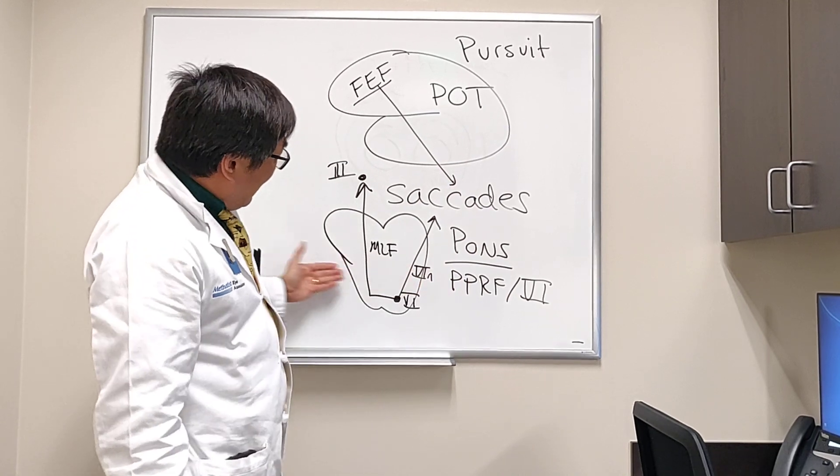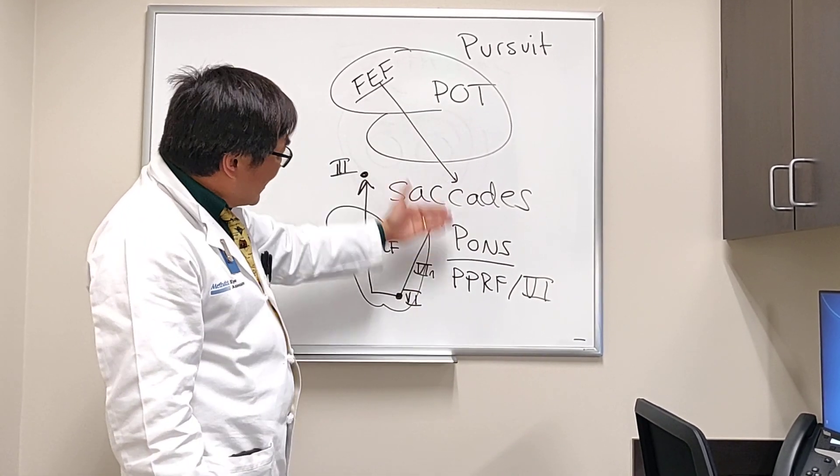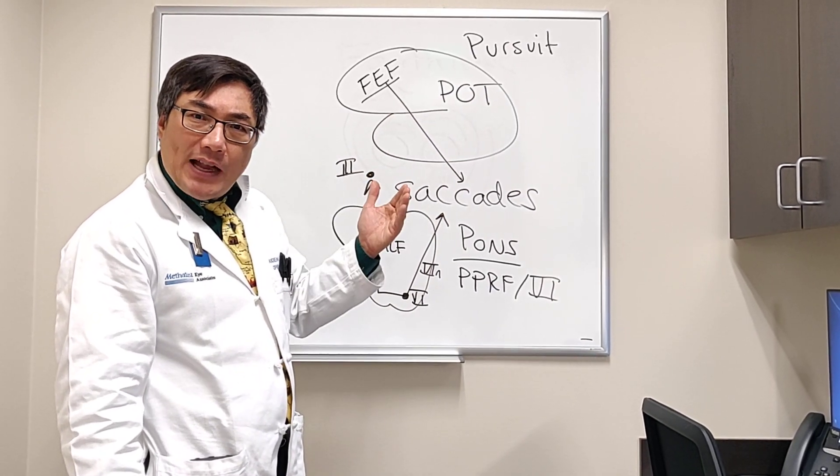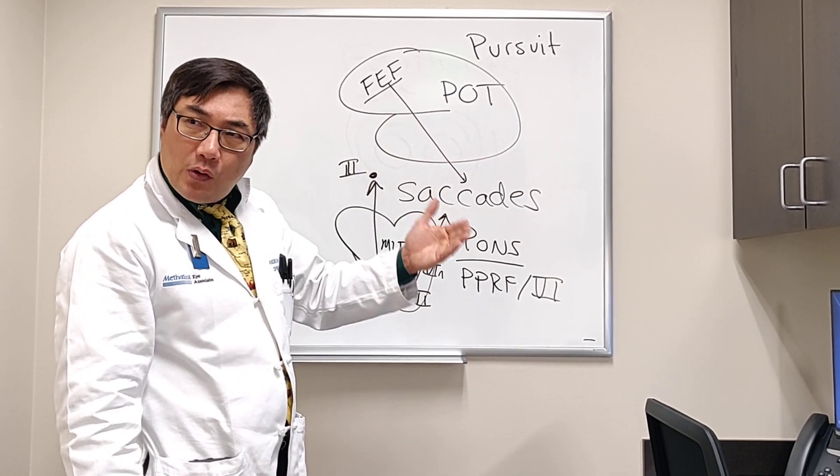And just like what we talked about with the saccades, it has to use the same final common pathway. For the vertical gaze center in the thalamual mesencephalic junction, that's cranial nerves three and four.